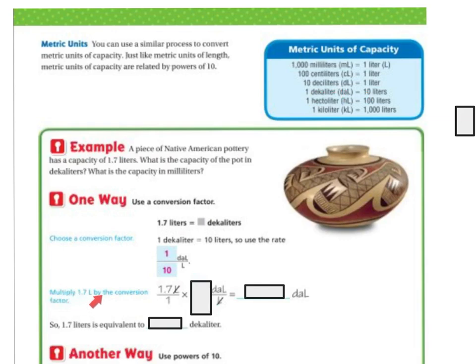So if I multiply 1.7 by the conversion factor 1 over 10, then I'm going to get 0.17. Because 1.7 times 1 is 1.7, and then I have to divide by 10, which essentially is just moving your decimal over one space. That's all I'm doing when you divide by 10. So 1.7 liters is equivalent to 0.17 deciliters.